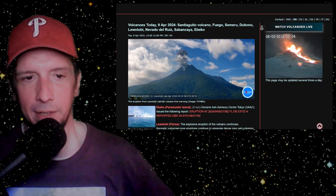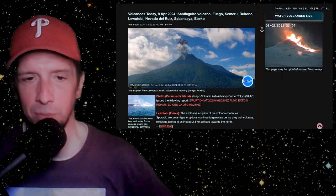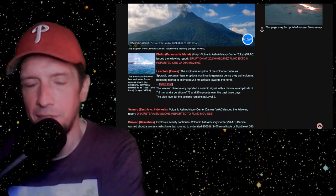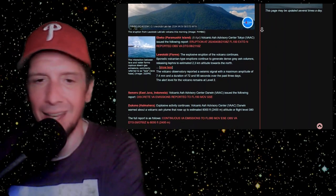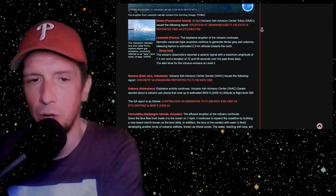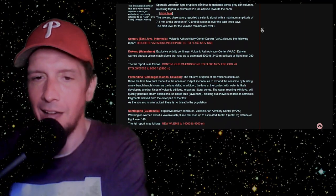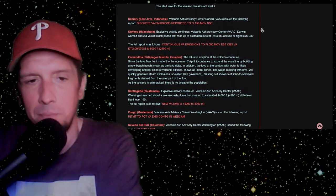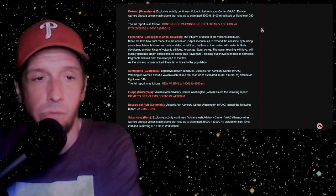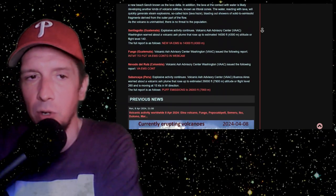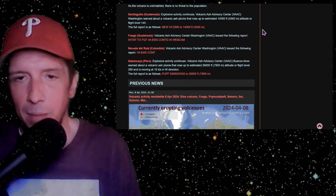Here's what else is erupting: Lewotolo has been producing some dense ash plumes, also Ebeko. 10,000-foot ash plume from Ebeko, 15,000-foot ash plume from Semeru, Decono exploding, Fernandina continuing to create a lava delta, basically a river of rock making its way to the ocean. Also Santiaguito, Fuego, Nevado del Ruiz, and Sabancaya.